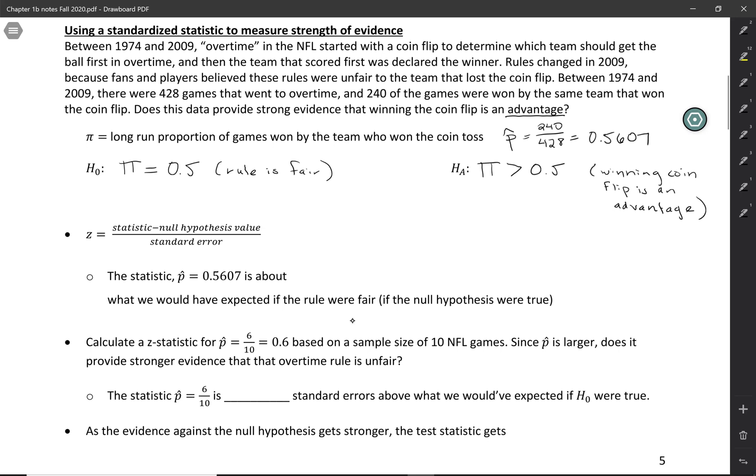What we really need to know is: this sample proportion 0.5607 is higher than 0.5, but is it high enough to be convincing? Is this the kind of value that would happen just by random chance alone in this particular set of games? We already know one way to answer this is to calculate a p-value, but here we're going to do something a little different.